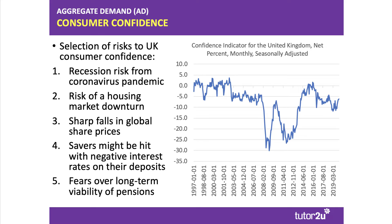As many countries shut down production and people movement, there is also the risk of a housing market downturn. House prices in the UK, in some parts of the country, are already falling and the rate of change of property prices has been declining. We've also seen big falls in stock market prices — in the United States the market moved into bear market territory, and the value of leading shares has been cut across the board in many parts of the world.